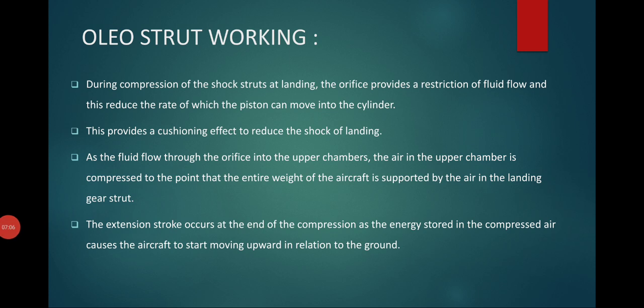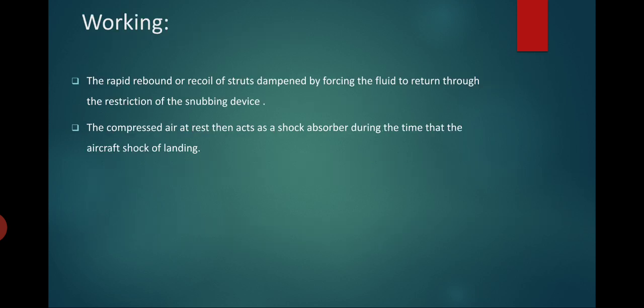As fluid flows through the orifice into the upper chamber, the air in the upper chamber is compressed to the point that the entire weight of the aircraft is supported by the air in the landing gear strut. The extension stroke occurs at the end of compression, as the energy stored in the compressed air causes the aircraft to start moving upward relative to the ground. The rapid rebound or recoil of the strut is damped by forcing the fluid to return through the restriction of the snubbing devices. The compressed air then acts as a shock absorber during the landing impact.